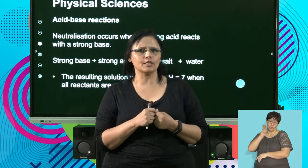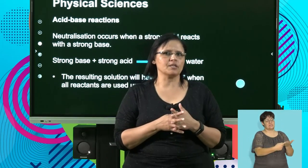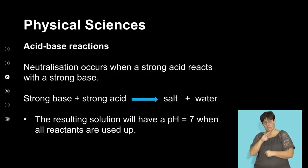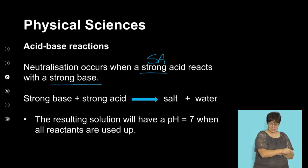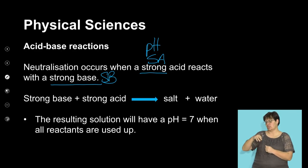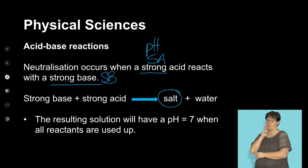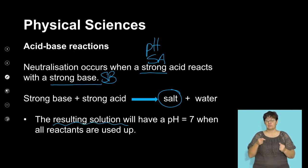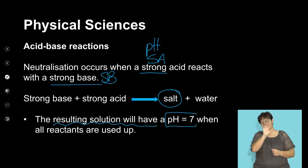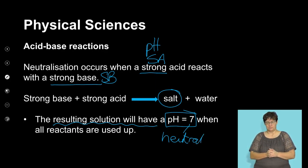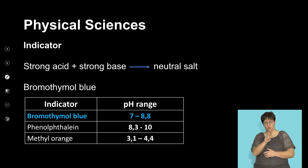Neutralization occurs when a strong acid reacts with a strong base. The acid and the base react to form a salt and water. If we have a strong acid with a pH between 0 and 2, and a strong base with a pH of 13 or 14, when they react they will form a salt and water, but specifically the resulting solution will have a pH of more or less 7 — a neutral pH.